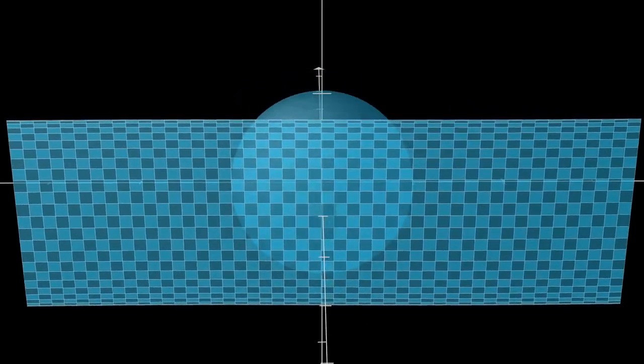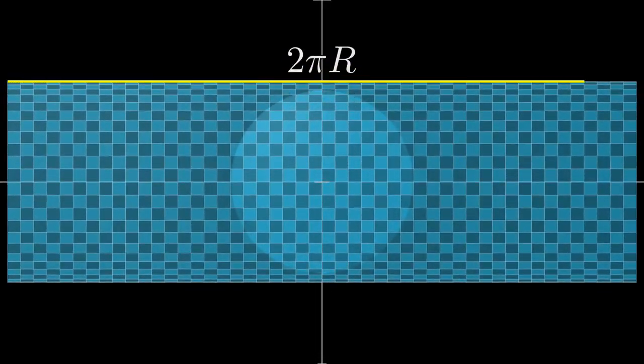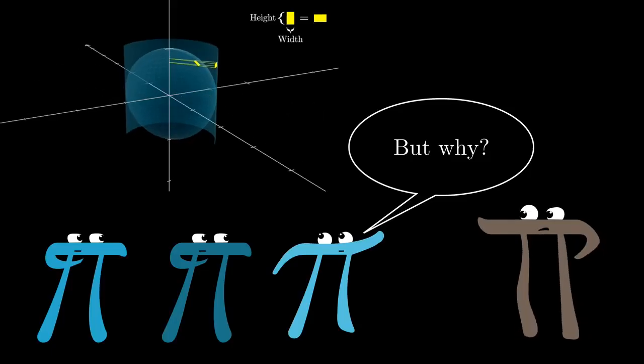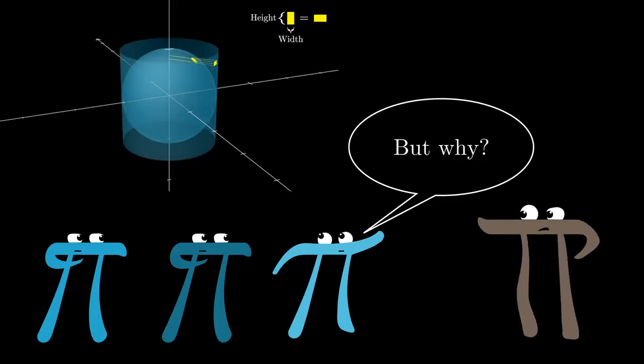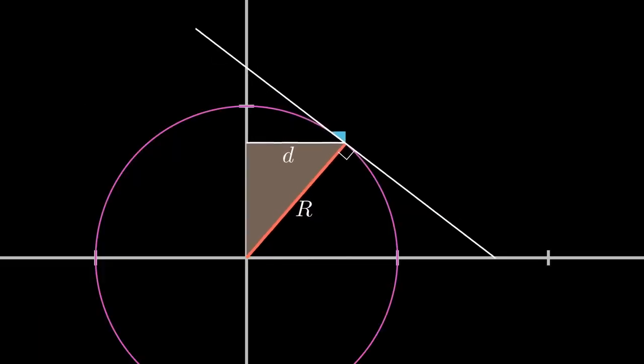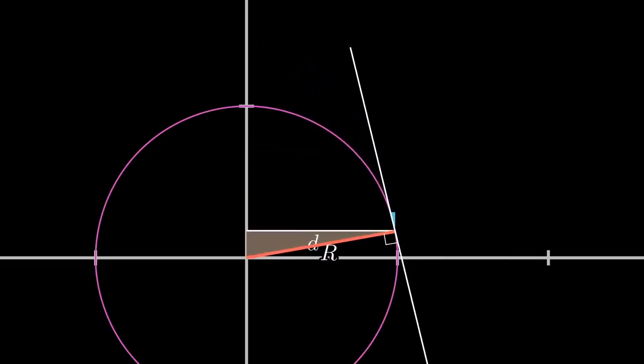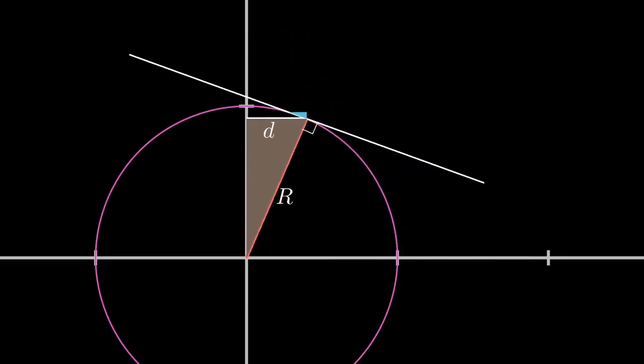Already, as a rough sketch, wouldn't you agree that this is a very pretty way of reasoning? Of course, the meat here comes from showing why these two competing effects cancel each other out, and in some ways, the details fleshing this out are just as pretty as the zoomed out structure of the full argument. So let's dig in.